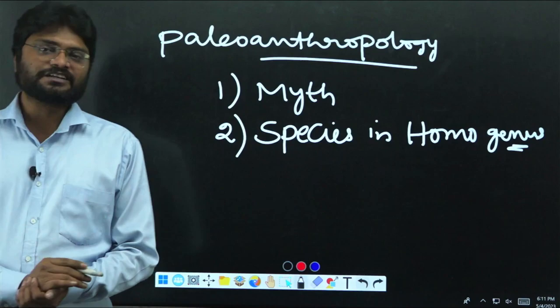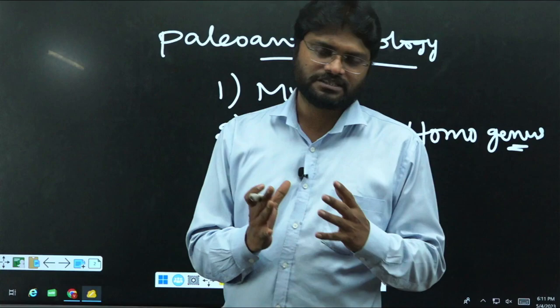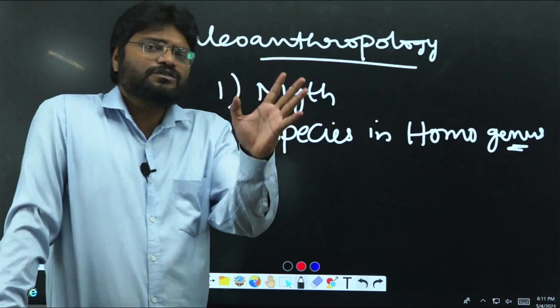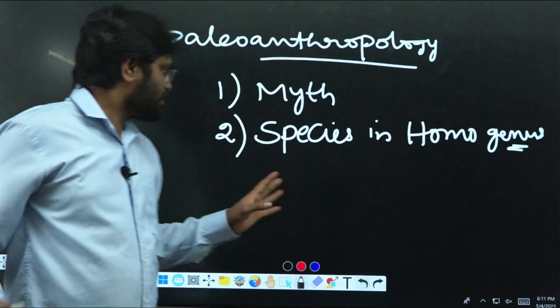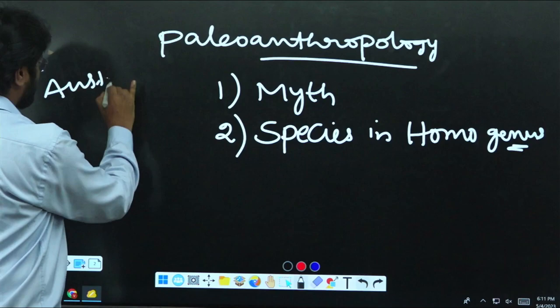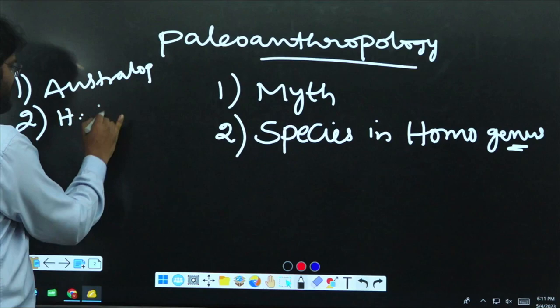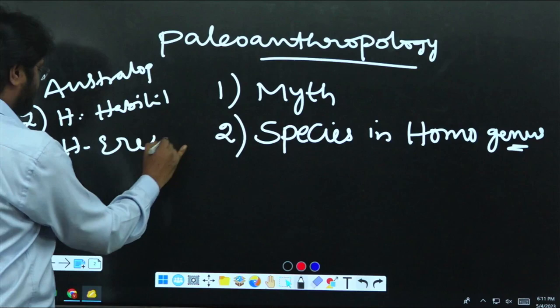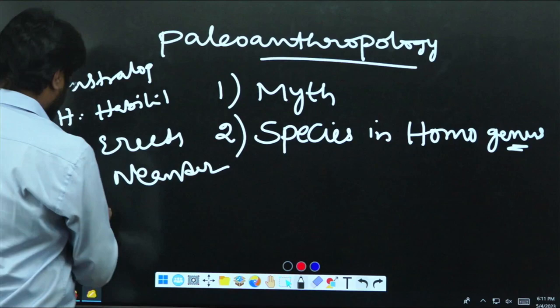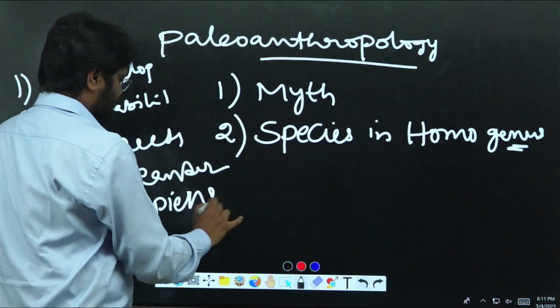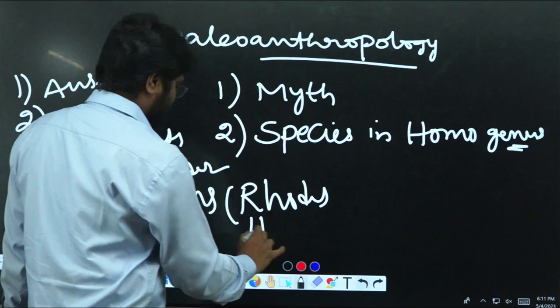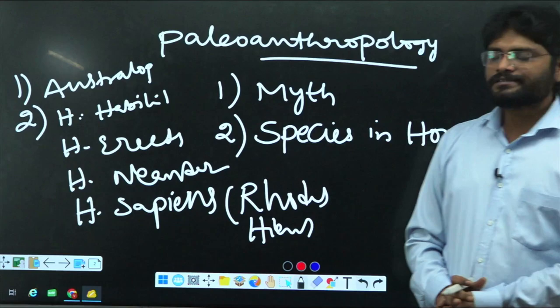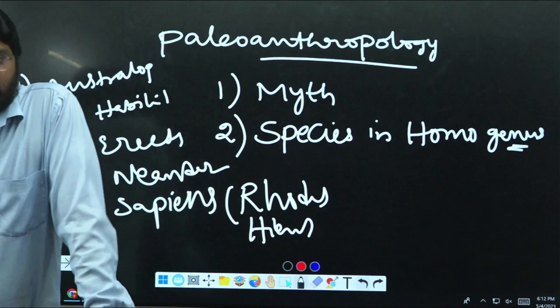When it comes to the paleoanthropology — the study of the evolution of human beings — for UPSC our syllabus discusses only a few fossil men: Australopithecus, Homo habilis, Homo erectus, Homo neanderthalensis, Homo sapiens sapiens, and intermediate fossils like Rhodesian man or Heidelbergensis. These are the five to six fossils everybody talks about when it comes to human evolution.